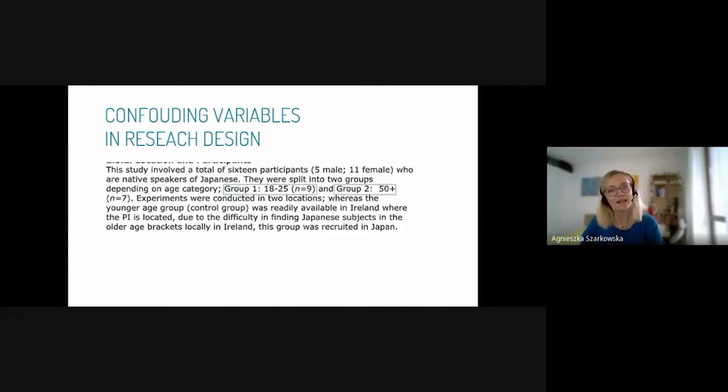Sometimes in our studies, we tend to include unnecessarily some confounding variables. Have a look here. We have a study on Japanese native speakers, and we're interested in age. We have young speakers and more senior people, which is a pretty good selection. Then you have an explanation. The young speakers were available where I was living in Ireland, but we didn't have older Japanese speakers, so we recruited the group in Japan. So you're confounding age and geographical location. You don't know if your results are due to age or due to the place where they lived.